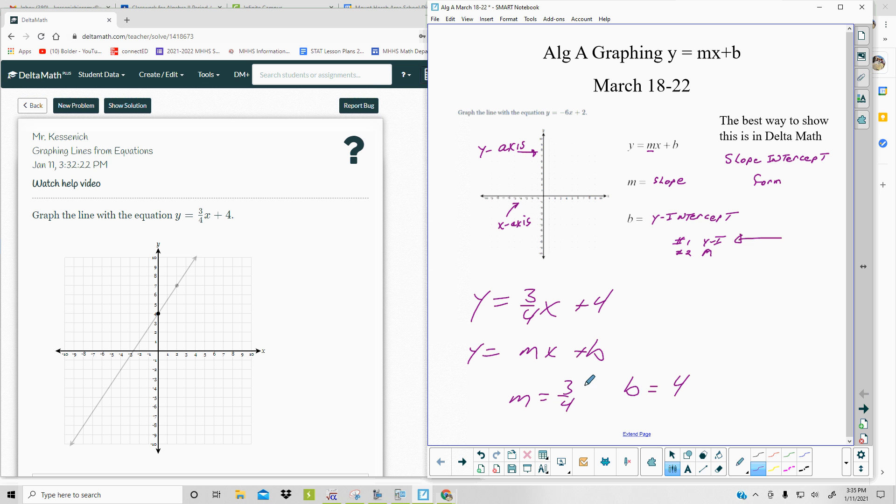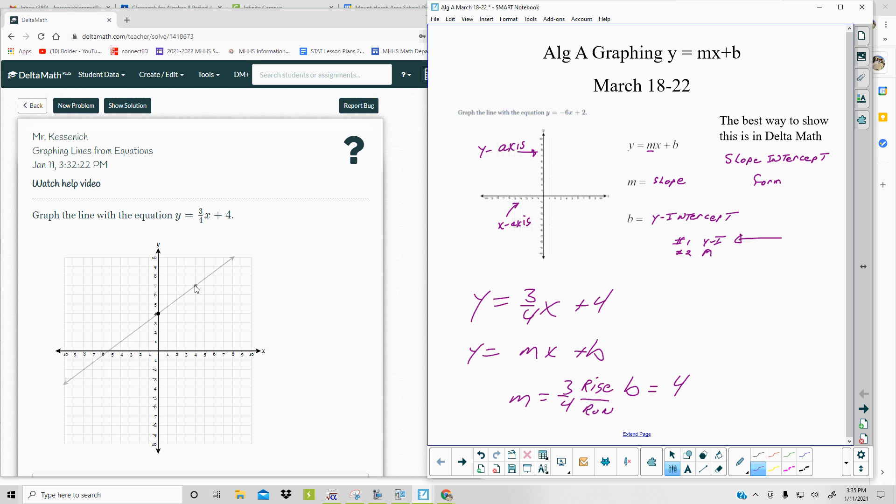The y-intercept is where you cross the y-axis. The y-intercept is 4, so you go and put a mark and click on that point. Now from that point, you're going to rise 3 and run 4. This is your rise, put a number on top, and then this is your run. So from this point, you're going to rise 3, 1, 2, 3, and then run 4, 1, 2, 3, 4, and click again. And there's your line.